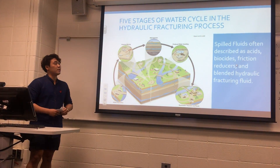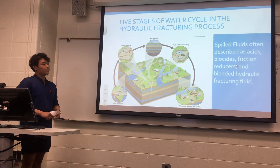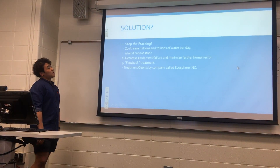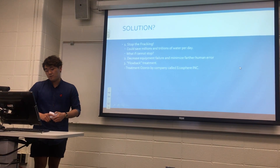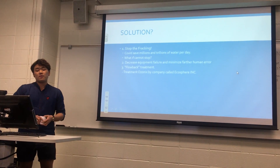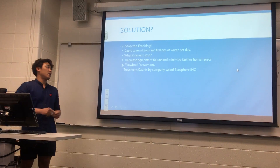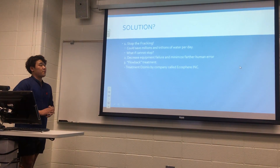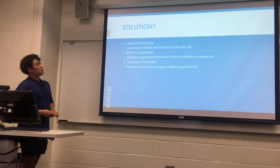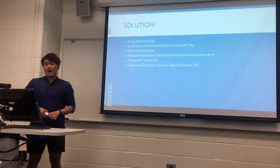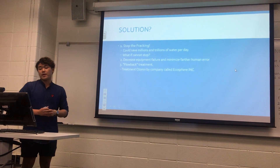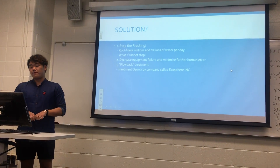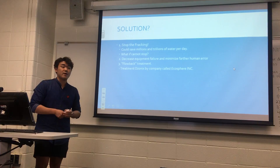So what can be done to decrease and minimize those problems? First, I thought about stopping fracking entirely, which could save millions and trillions of gallons of water per day — but I don't think that's going to happen for a while. The second option is to decrease equipment failures and minimize human error by training workers with professional instruction. The third option is flowback treatment. I found a company called EcoSphere Inc. that made a treatment called Ozonics. So the water can be treated and reused. I think fracking can continue, but it needs to find better treatment methods to reuse the water.